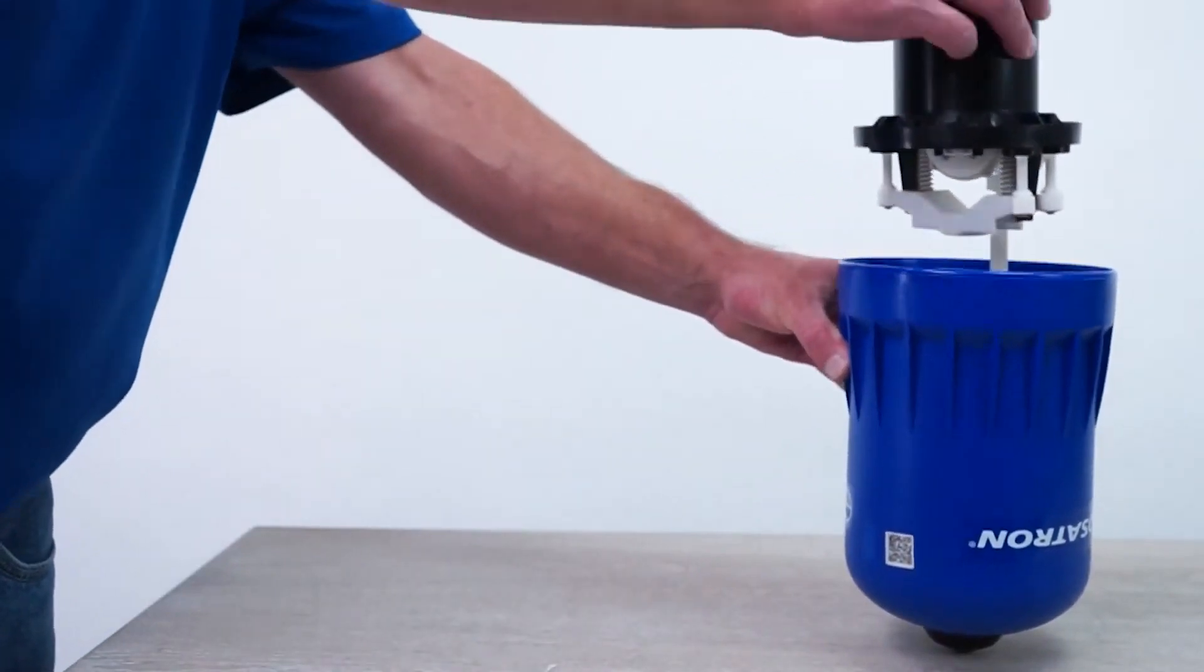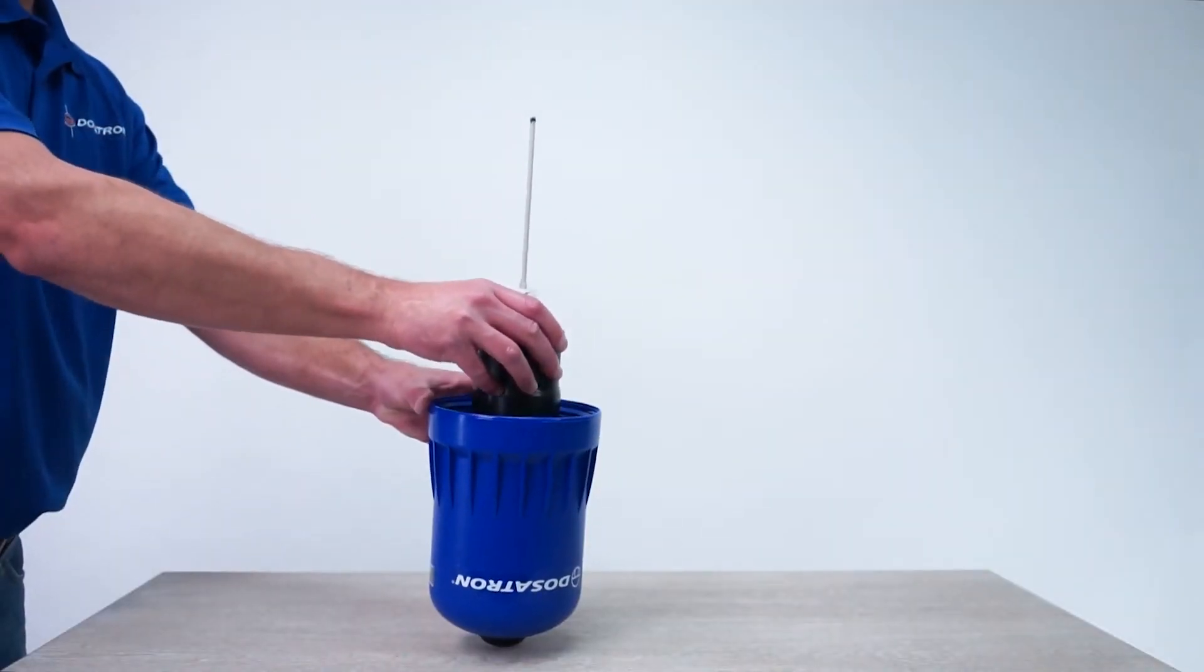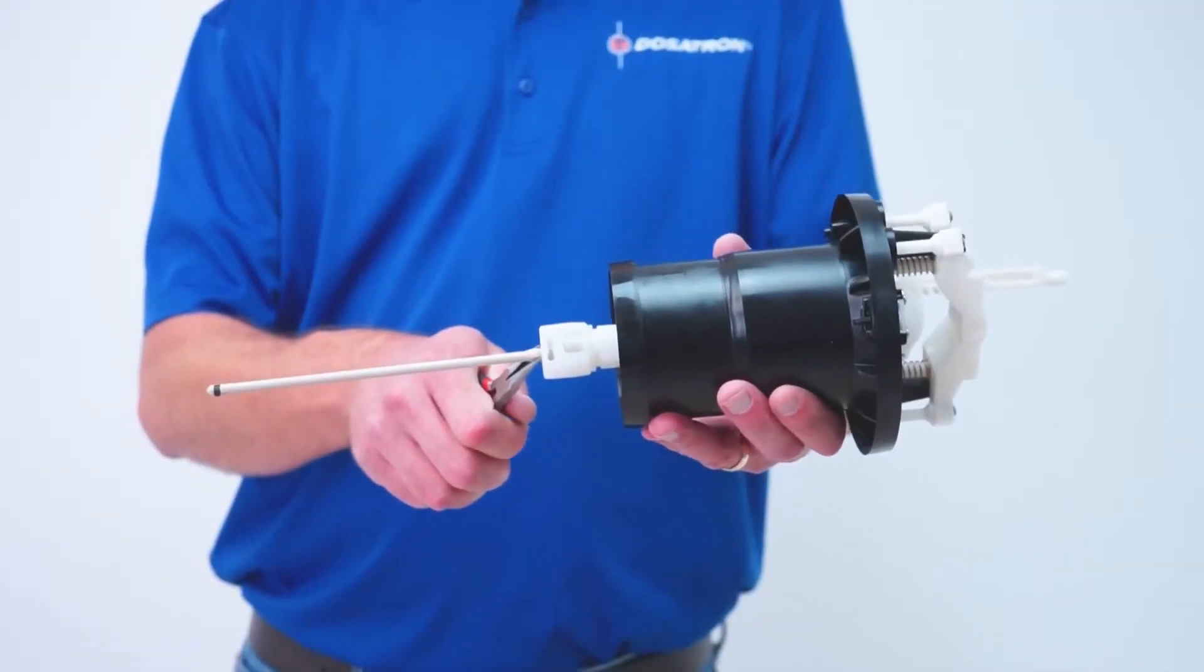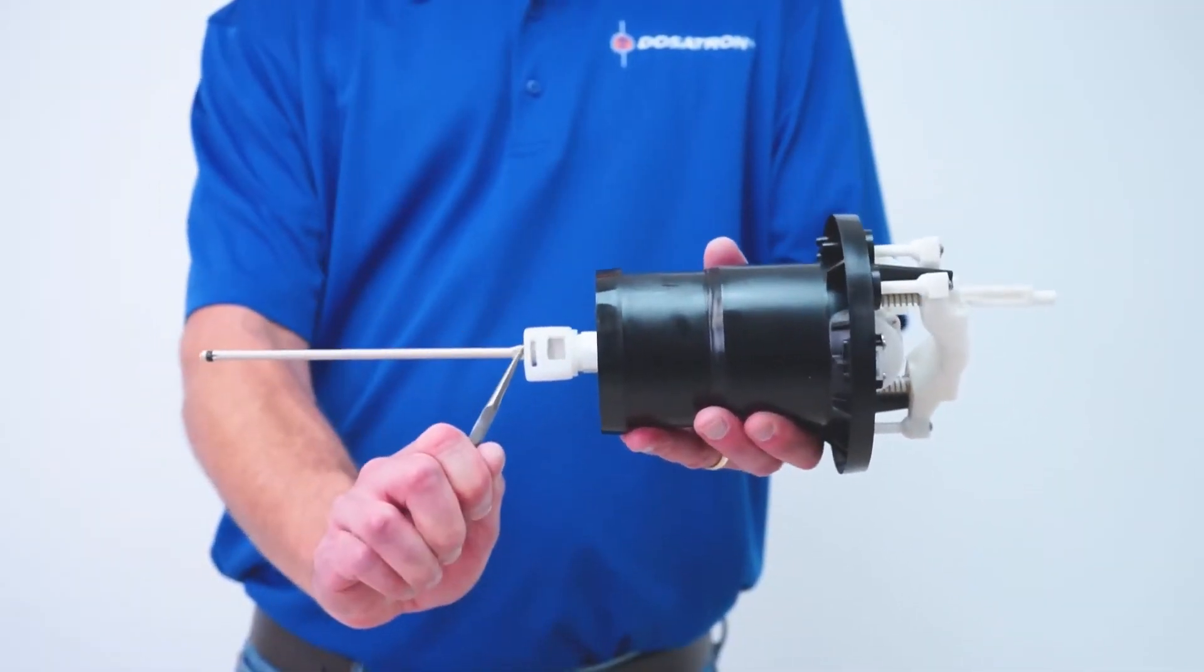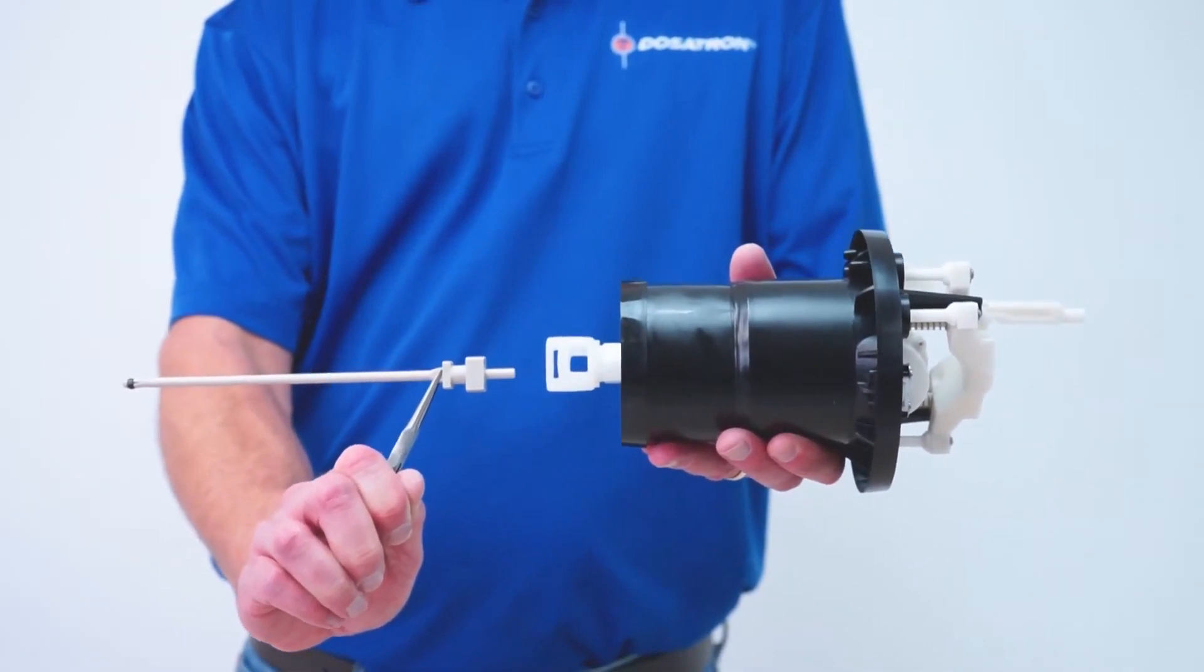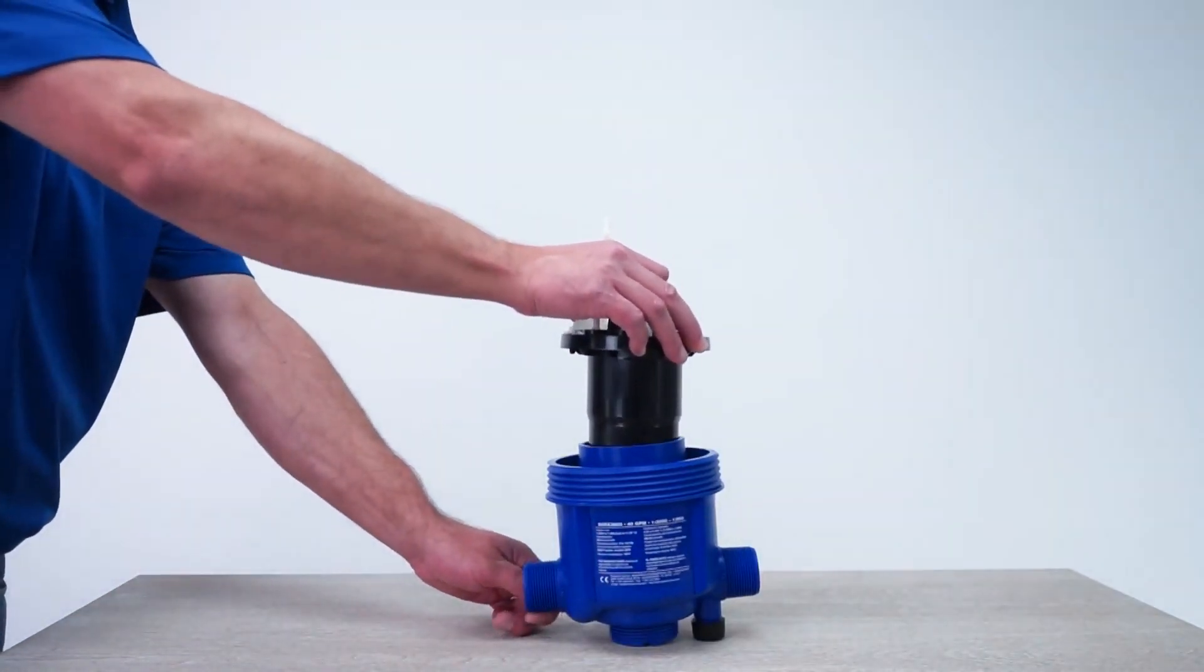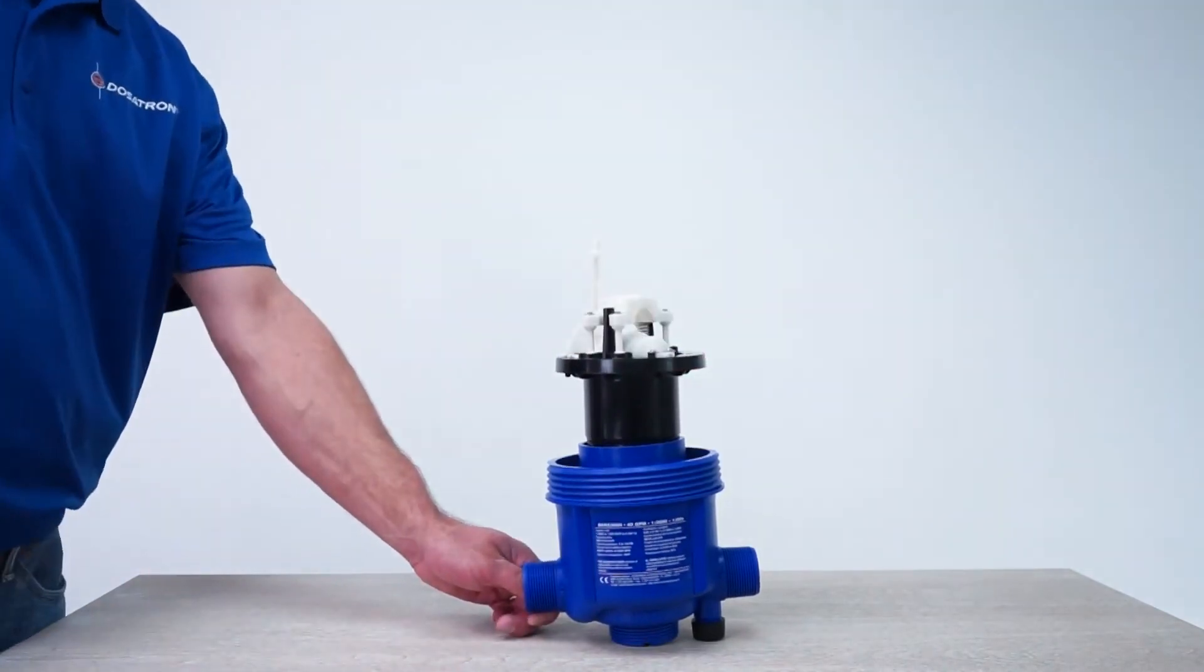To test the upper flange, invert the piston and insert it squarely halfway into the blue bell housing. It should stay in place. To test the lower flange, use the needle nose pliers to twist the plunger counterclockwise and remove. Then insert the piston squarely into the body about halfway. It should stay in place. If either is loose, the piston shell needs to be replaced.